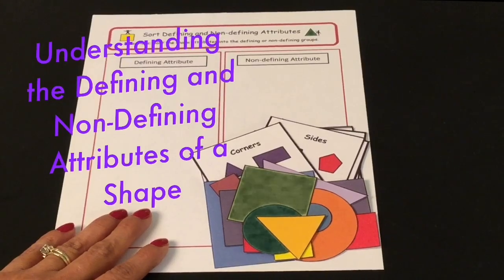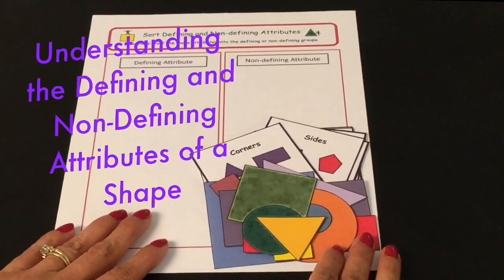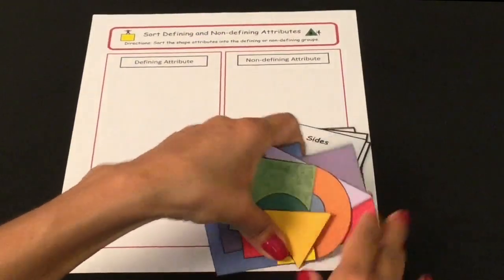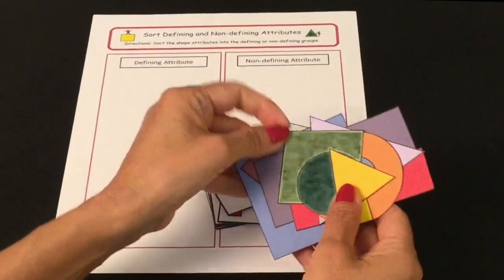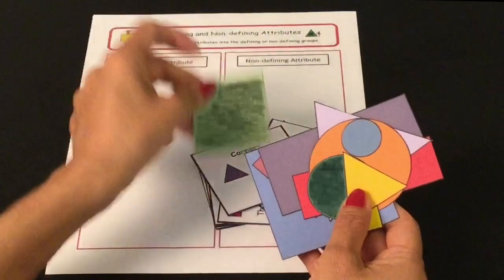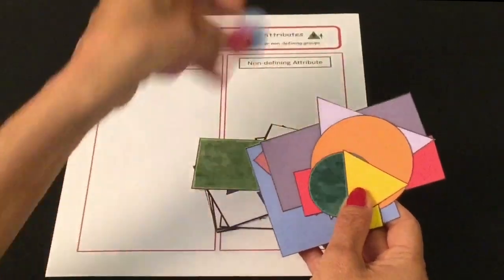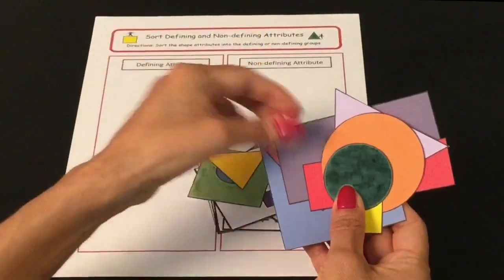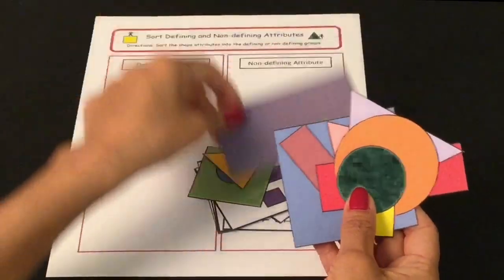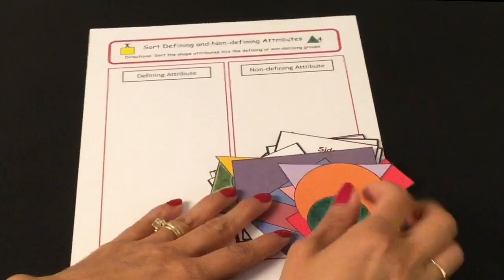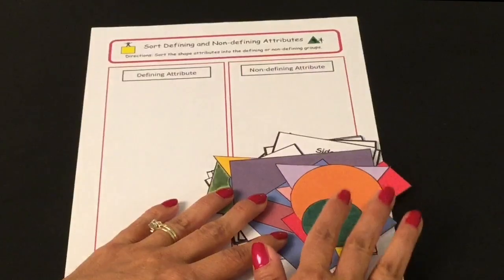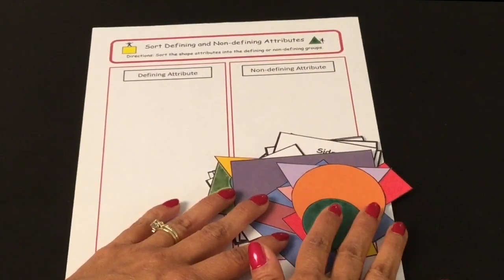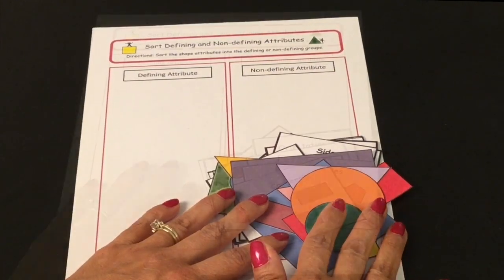Hi, thanks for joining me today. I'm sure by now you already know your shapes — the square and the circle and the triangle and the rectangle — but what you may not know is that shapes have special attributes, and that's what we're going to talk about today.